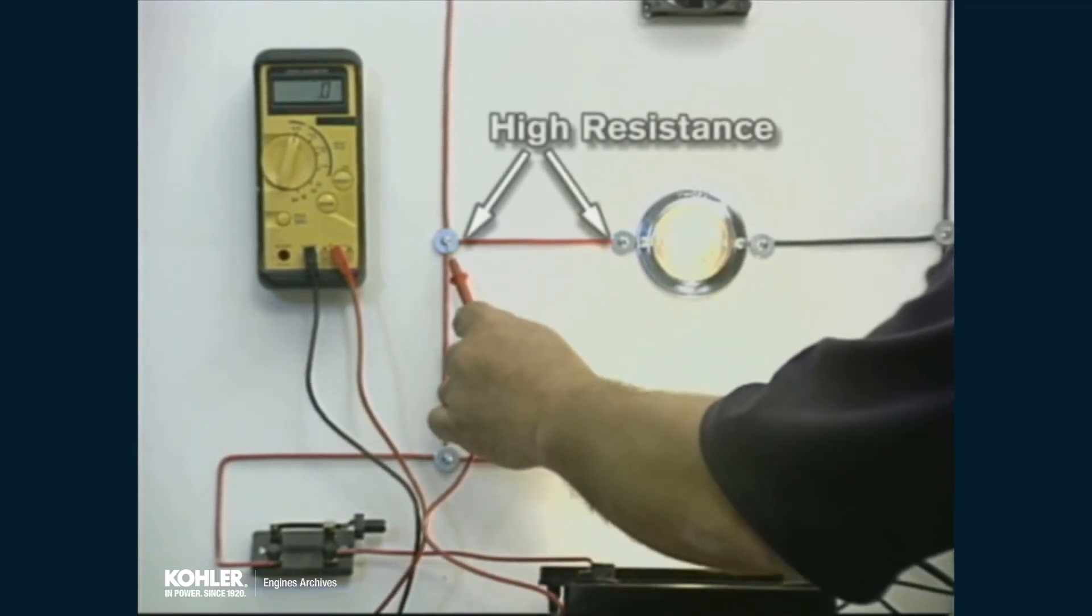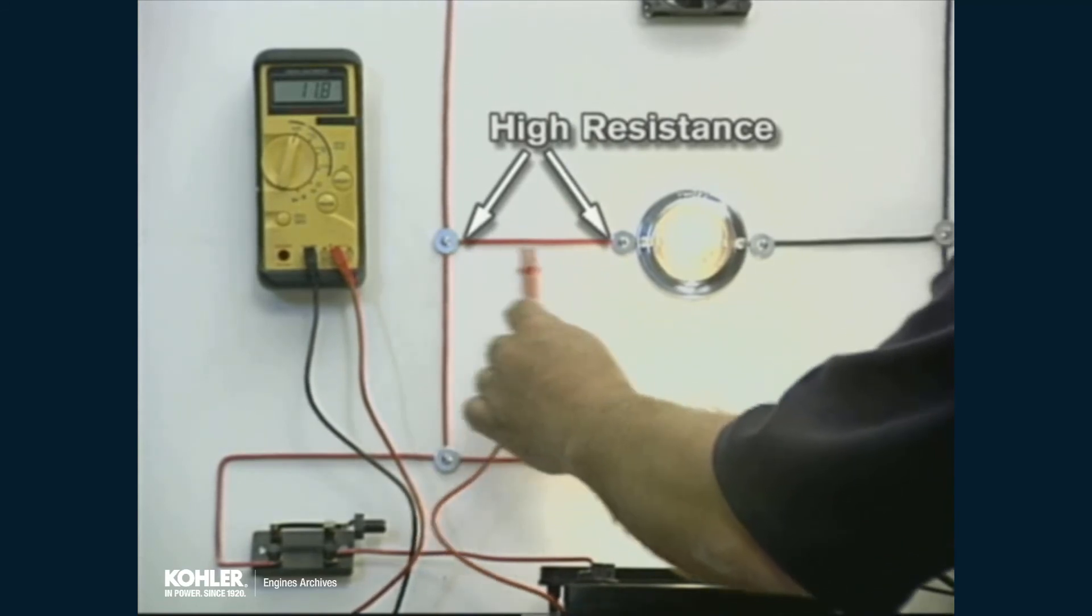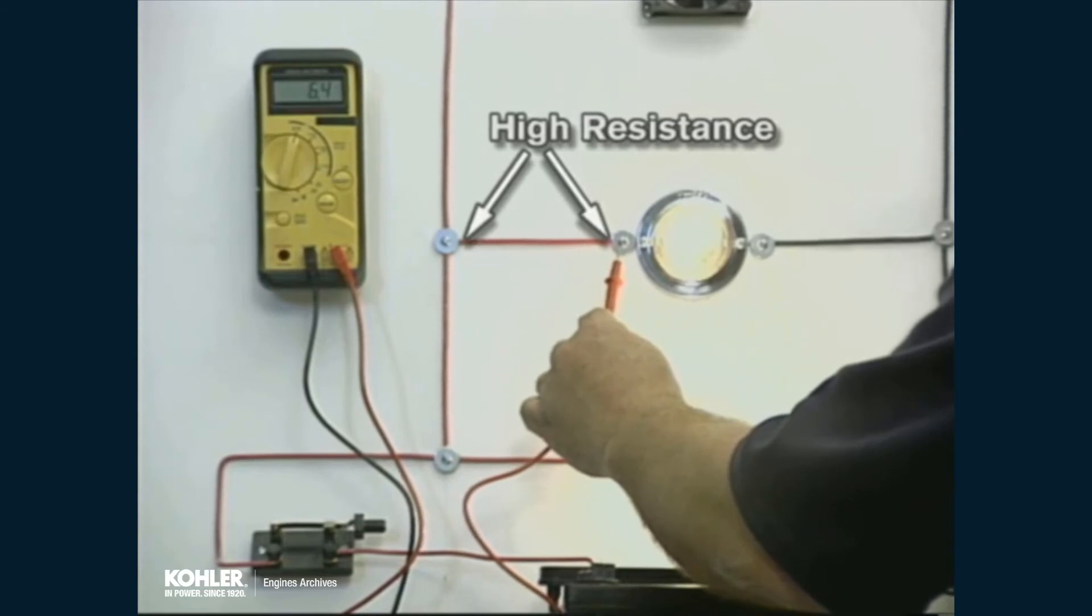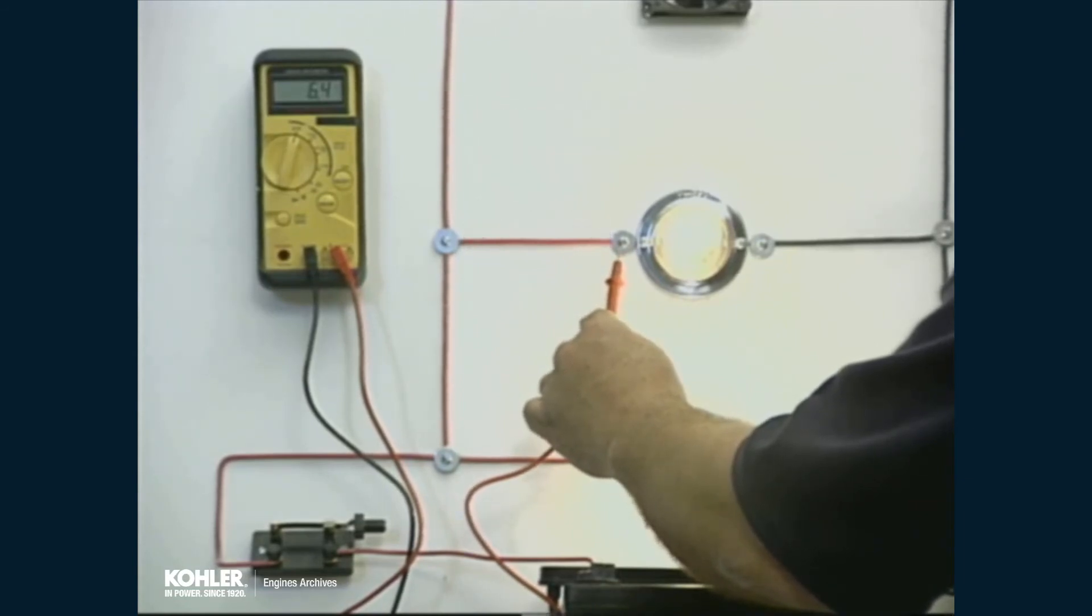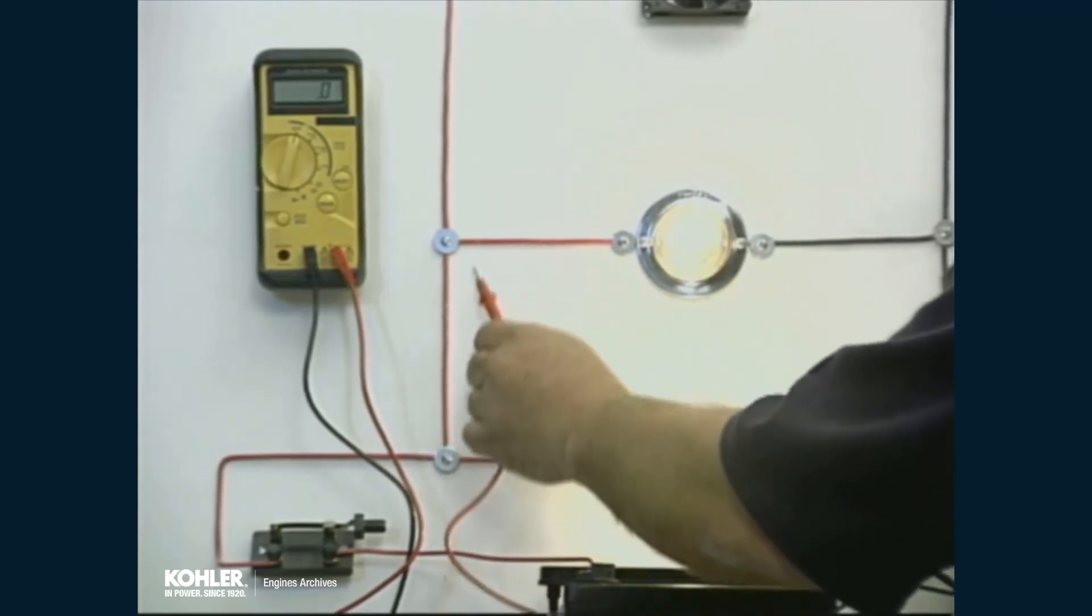However, if a high resistance exists in the circuit between the voltage source and test point, a reduced voltage will be observed between the resistance and ground. Taking readings at various points will allow identification of the resistance by narrowing down the section between normal and low readings.